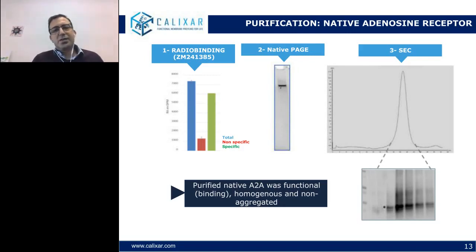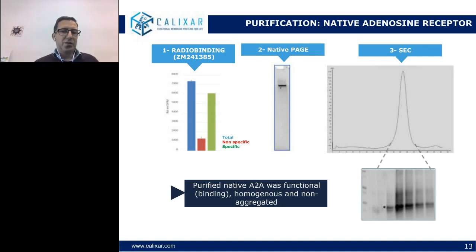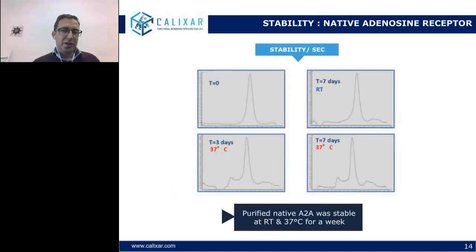Looking at native PAGE, the protein migrates into the gel, meaning no aggregates and the protein seems quite homogeneous. In size-exclusion chromatography, we see a similar conclusion — the protein does not elute in the void volume and behaves as a homogeneous sample. The next question is: is it stable? By size-exclusion chromatography over time, even after seven days at 37 degrees, this native GPCR is still stable. There is some shoulder at three days but it does not worsen after four more days. This is quite astonishing because native GPCRs are not very stable and people have been truncating and mutating them extensively to achieve stability.